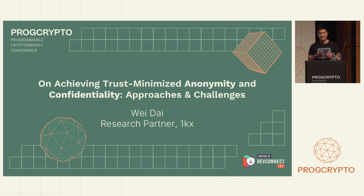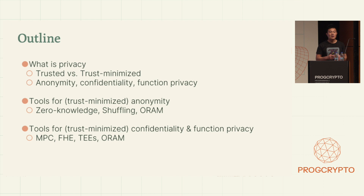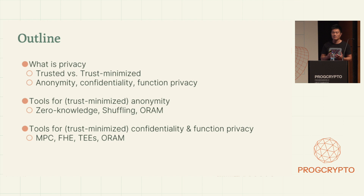Here's the outline for the next 15 to 20 minutes. First, we'll look at how we define privacy — in particular trust minimization and different types of privacy we'd like to achieve. We'll look through two case studies: voting and dark pools, or privacy-preserving order books, to understand how tools in programmable cryptography can help us achieve those goals.